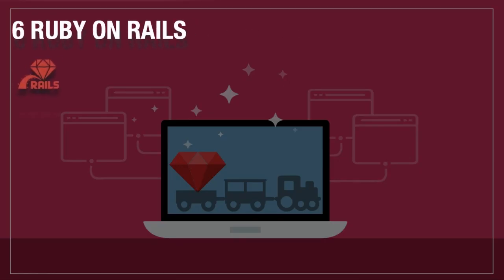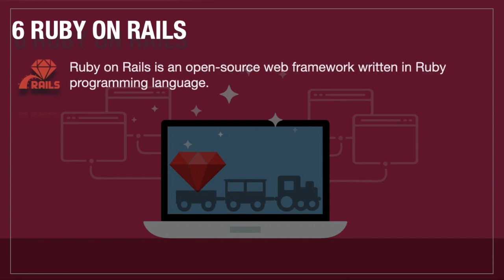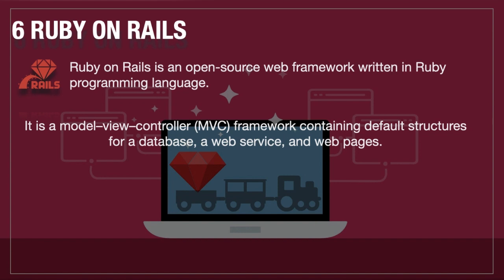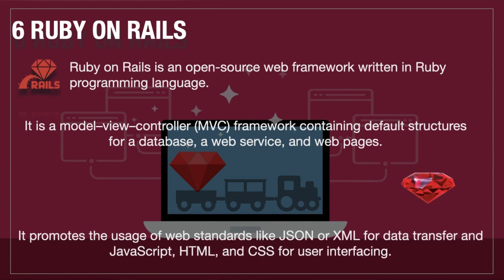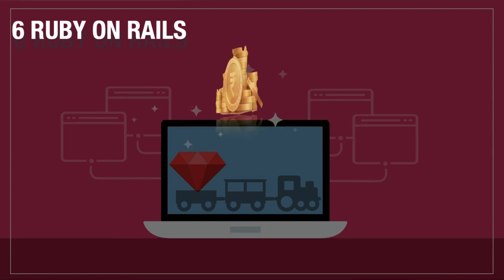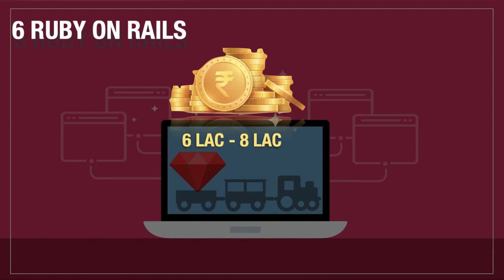In 6th position is Ruby on Rails. If you know Ruby, then you know about Ruby on Rails. Ruby on Rails is an open source web framework written in the Ruby programming language. It is basically for web developers and is an MVC framework which contains a structure for database, web services, and web pages. It promotes web standards like JSON and XML data as responses from web services, along with JavaScript, HTML, and CSS for user interaction and designing web applications. If you are aware of Ruby on Rails, you get at least 6 to 8 lakh per annum.